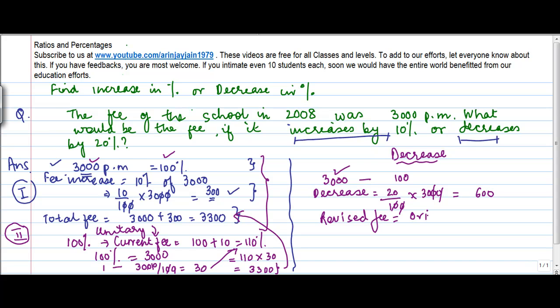So my revised fees is equal to original less the decrease, or 3000 minus 600 is equal to 2400.